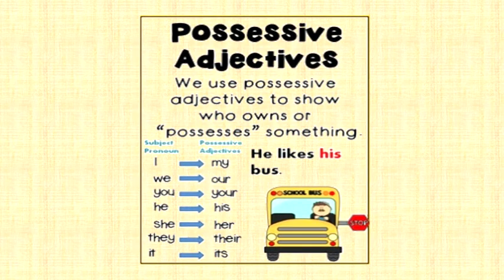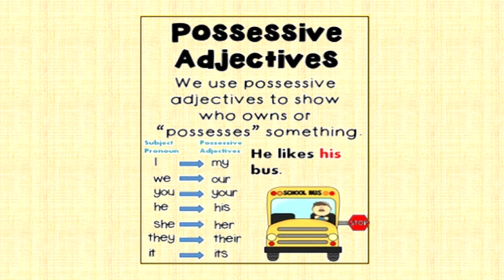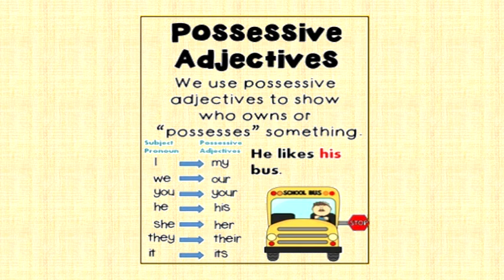What are possessive adjectives? Possessive adjectives means to show who owns or possesses something. The meaning of the word possession means belongs. So any word which tells us about who owns something, or a thing belongs to whom — that word, if used with a noun, becomes our possessive adjective. Like: he likes his bus. The word bus is the noun, and whose bus? His. The word his becomes our possessive adjective.